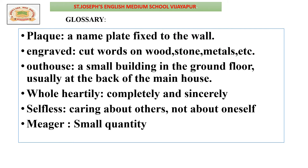Glossaries mean the difficult words which we find in the textbook. First one: 'plaque' — a nameplate affixed to the wall. Next: 'engraved' — cut words on wood, stone, metals, etc. Third: 'outhouse' — a small building on the ground floor, usually at the back of the main house. Next: 'wholeheartedly' — completely and sincerely.